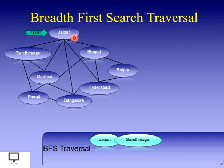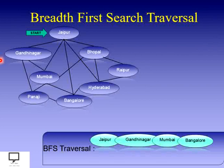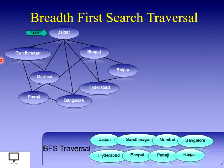First it will be Jaipur, then the elements at the same level are Gandhinagar, then Mumbai, then Bangalore, Hyderabad, Bhopal, and then we go for Panji and Raipur. How we get all these with the help of the Queue, that I am going to explain.